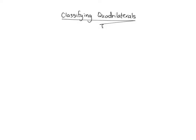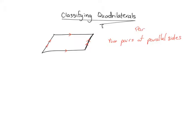I'm going to draw a parallelogram right now. What makes this a parallelogram? This is a parallelogram because we have two pairs of parallel sides. One arrow here and one arrow here indicates that these two sides are parallel. Two arrows here and two arrows here indicates that these two sides are parallel. That is what makes a parallelogram a parallelogram.